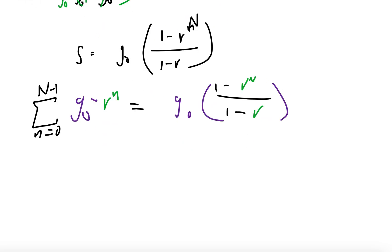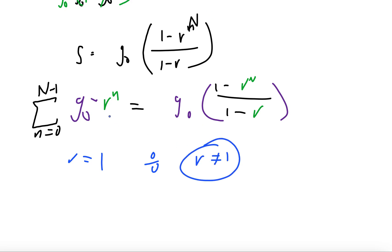When does this actually work? If r is equal to one, then on top you get one minus one which is zero, and on the bottom you get one minus one which is also zero — you get zero over zero. So we know that won't work; it's indeterminate. Therefore r cannot be equal to one.